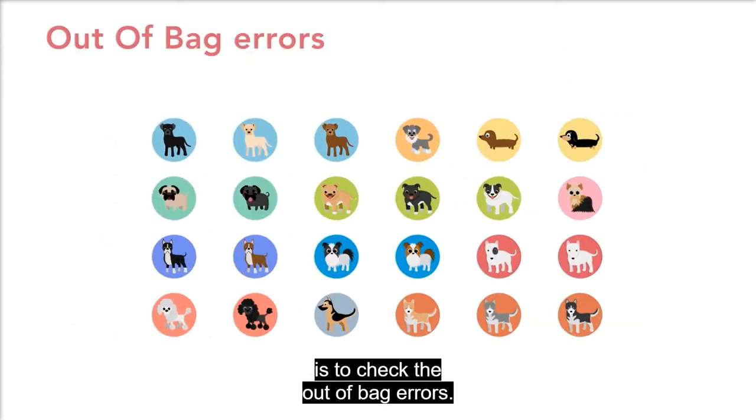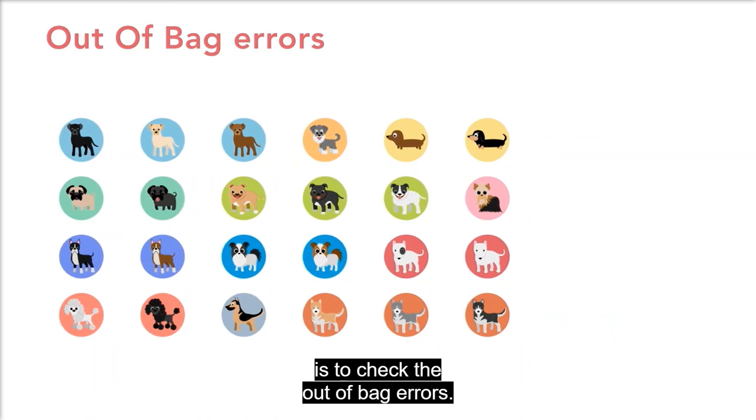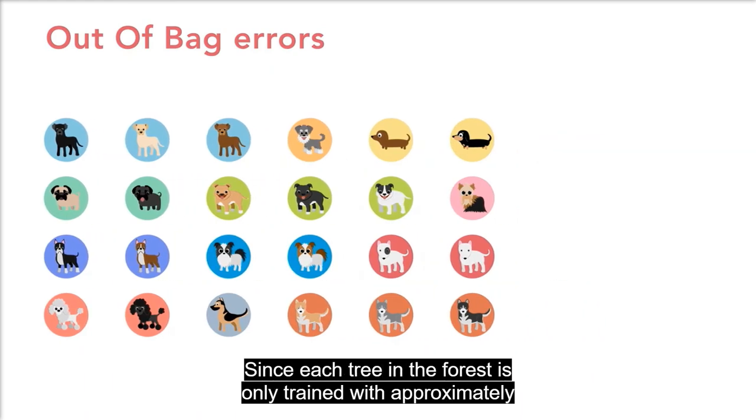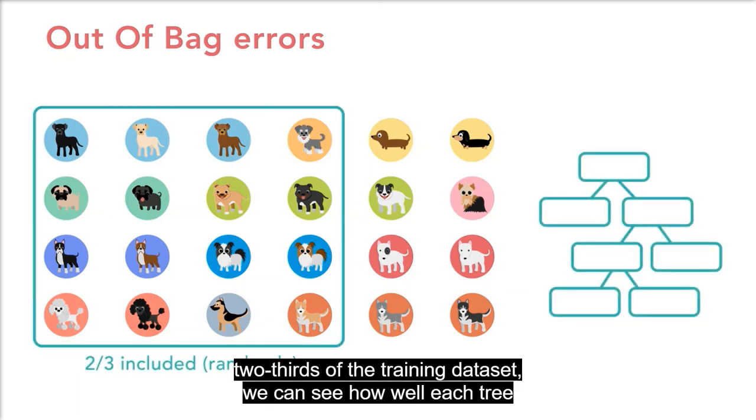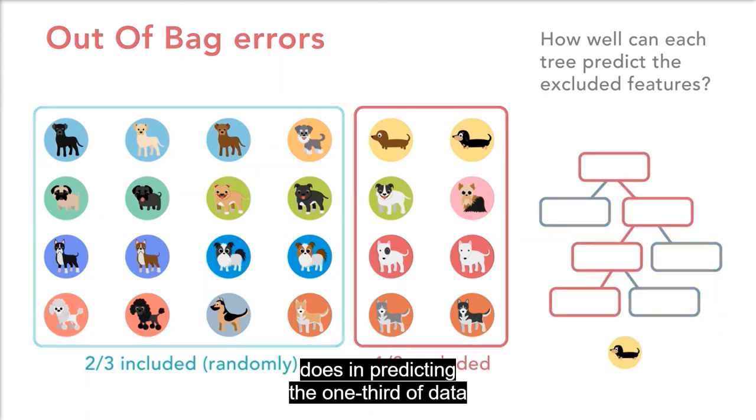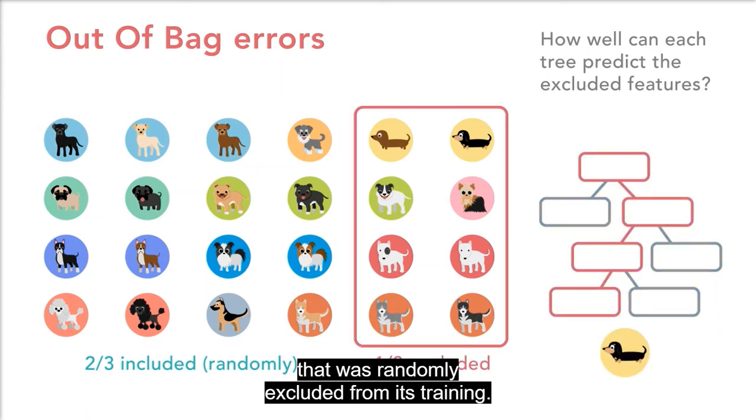Another way to evaluate model performance is to check the out-of-bag errors. Since each tree in the forest is only trained with approximately two-thirds of the training dataset, we can see how well each tree does in predicting the one-third of data that was randomly excluded from its training.